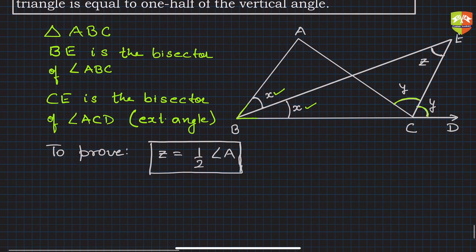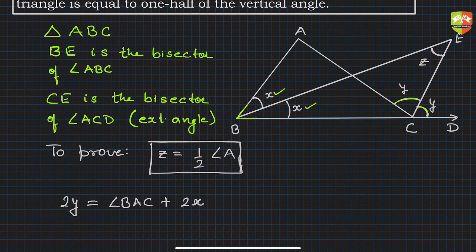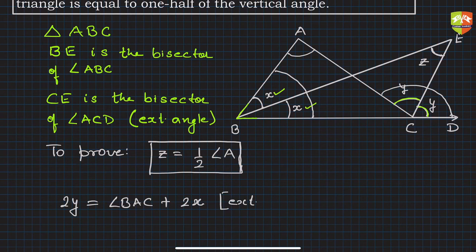Angles are involved and we can see there is a case of exterior angle. So can we not say that two times angle y — that is y plus y, which is ACD — is equal to the sum of interior opposite angles, which is angle BAC plus two times x, because ABC is that angle. So ACD equals angle BAC plus 2x by the exterior angle theorem. This is equation one.